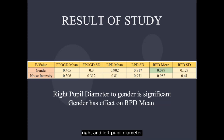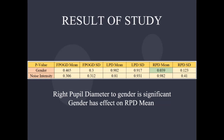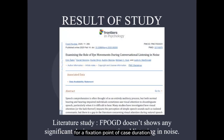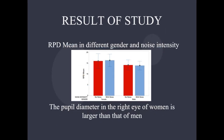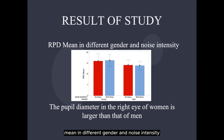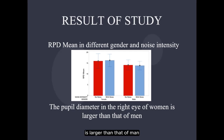Right and left pupil diameter: the right pupil diameter by gender is significant, meaning gender has an effect on RPD mean. For fixation point of gaze duration, according to our literature study, it doesn't show any significance during conversational listening in noise. For pupil diameter, this diagram shows the right pupil diameter mean in different genders and noise intensities — the pupil diameter in the right eye of women is larger than that of men.